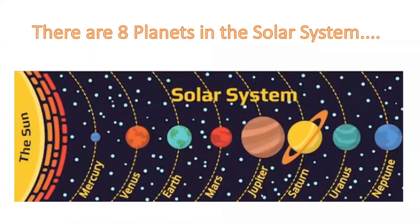So, my friends, there are eight planets in the solar system. They are Mercury, Venus, Earth, Mars, Jupiter, Saturn, Uranus, and Neptune. Let's learn some more fun facts about these planets.